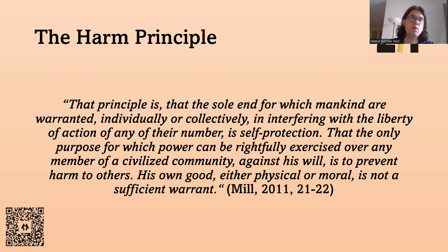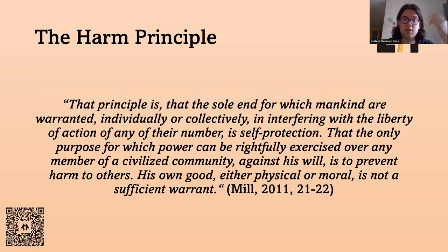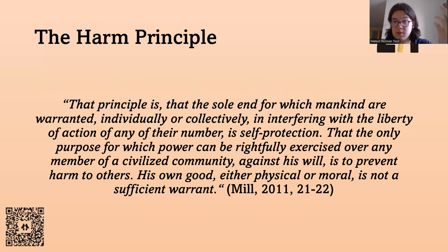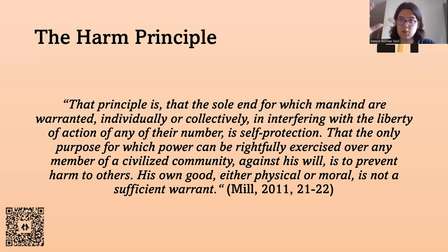For Mill, we have actions that only regard ourselves. In some instances, our actions don't interact with anyone else. If I drink a glass of wine at the end of the day, this doesn't harm anyone, which is why the state should not interfere — for example, they shouldn't say we shouldn't drink alcohol at all. On the other hand, we have other-regarding actions: actions that do not only concern ourselves but also other people. Drinking on the job, even though it's not that different from drinking alone at home in the evening, is harmful for Mill. Because when you drink at work and get drunk and cannot do your job properly, you're harming other people.